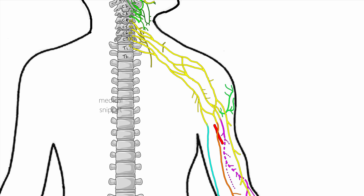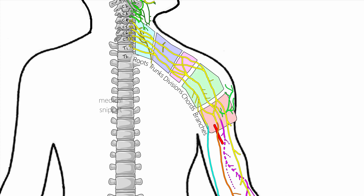Brachial plexus consists of roots, trunks, divisions, cords, and branches. The roots and trunks are in the posterior triangle of neck and the cords are in the axilla.